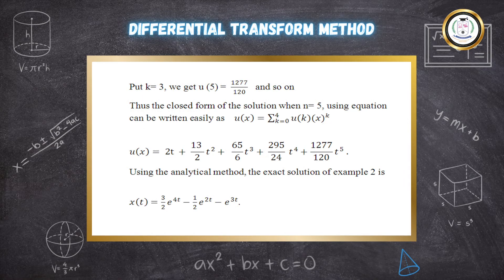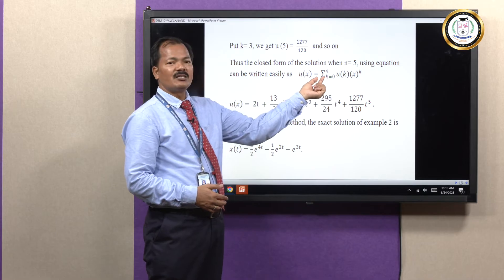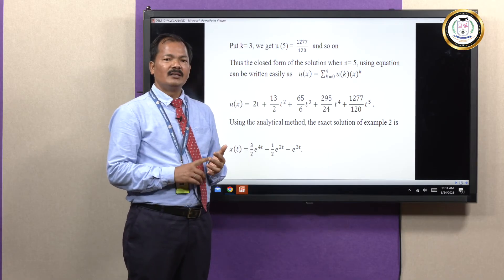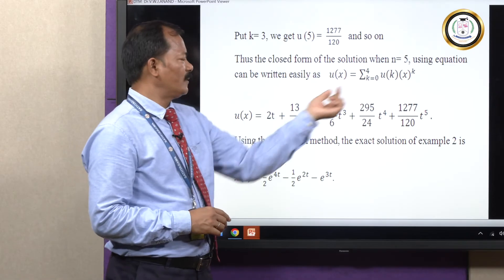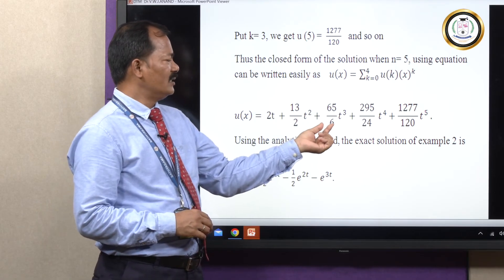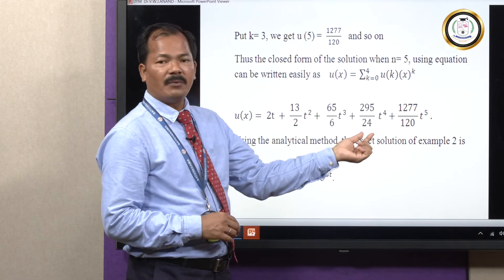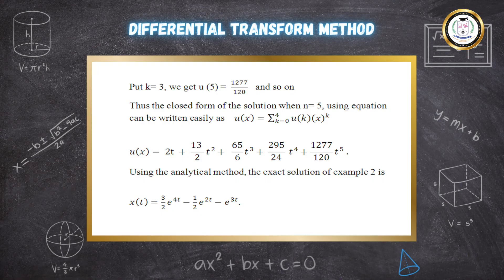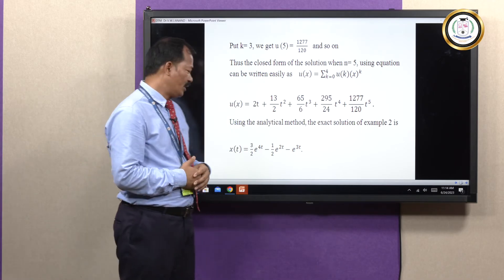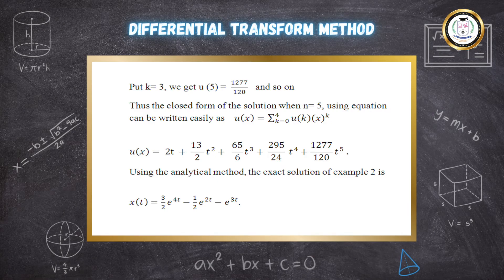Proceeding in this way and substituting all values in u of x equals sigma from k equals 0 to infinity of U of k times x to the power k, we get u of x equals 2t plus 13 over 2 t-squared plus 65 upon 6 t-cubed plus 295 upon 24 t to the power 4 plus 1277 upon 120 t to the power 5, and so on. Using the analytical method, the exact solution is x of t equals 3 over 2 e to the power 4t minus one-half e to the power 2t minus e to the power 3t.